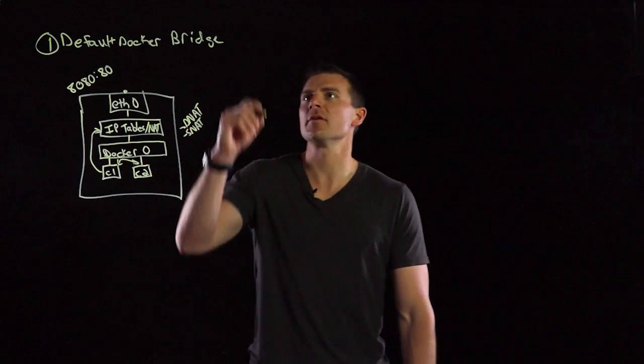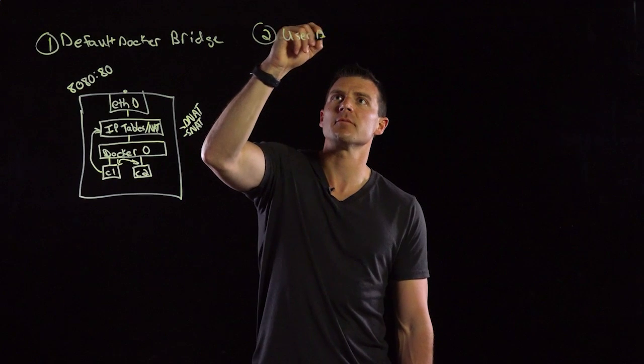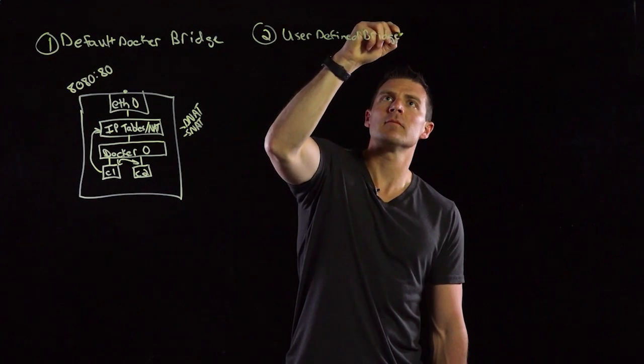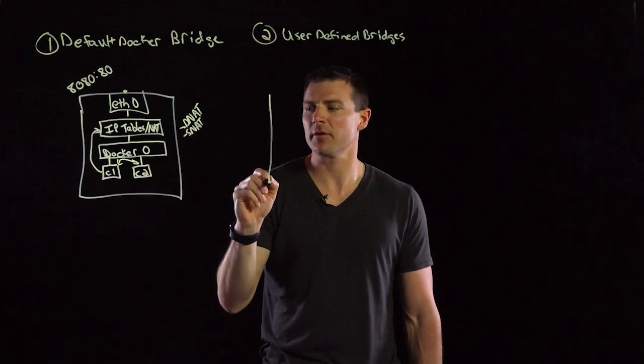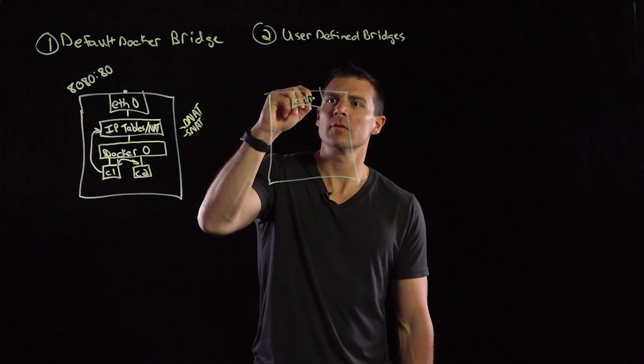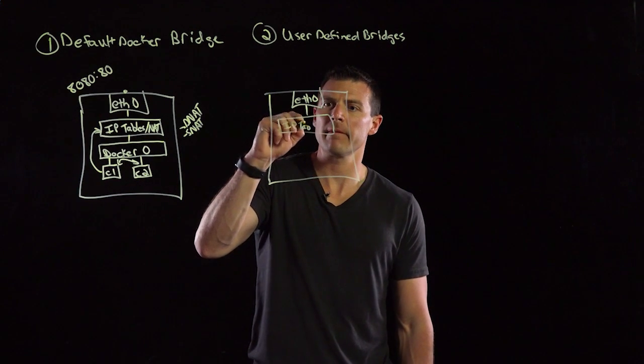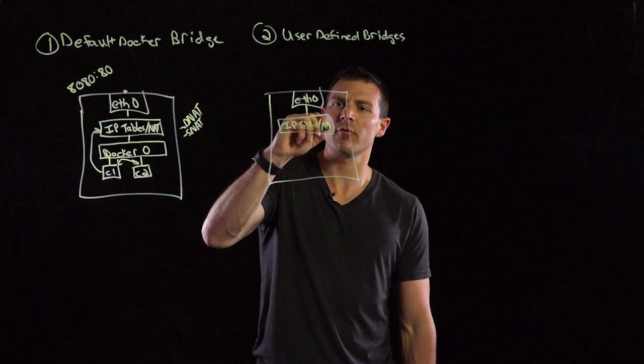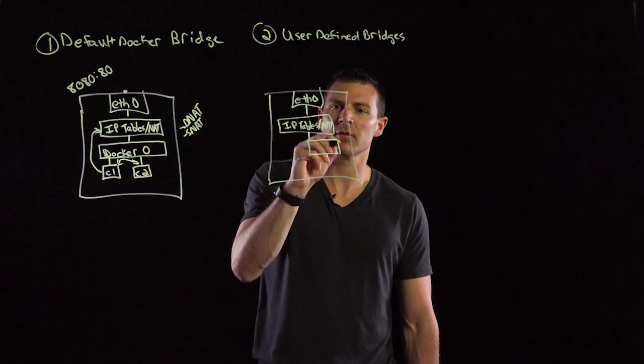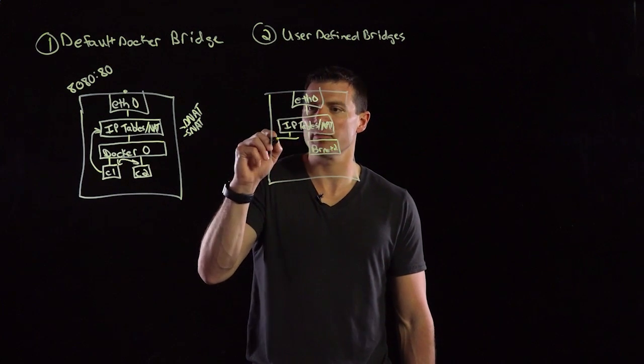The next option that we have is user-specific bridges or what are called user-defined bridges. This is a very similar model to the default Docker bridge. So we have our Docker container host with ETH 0. Again, we're going to have IP tables in here also performing NAT. And below this, we're going to actually be able to make user-defined bridges. So this could be BRNET 2. Over here, we could put BRNET 1.